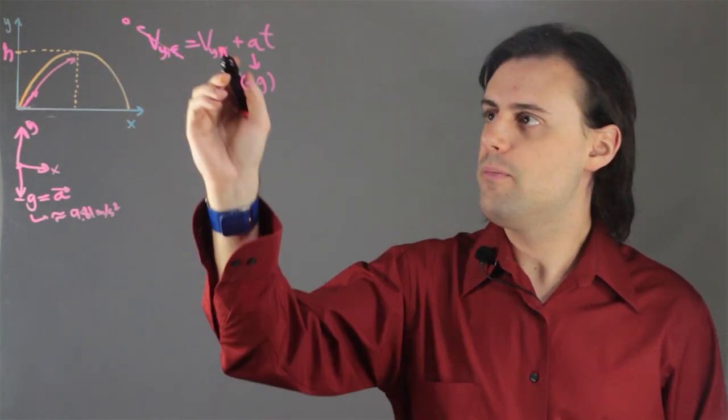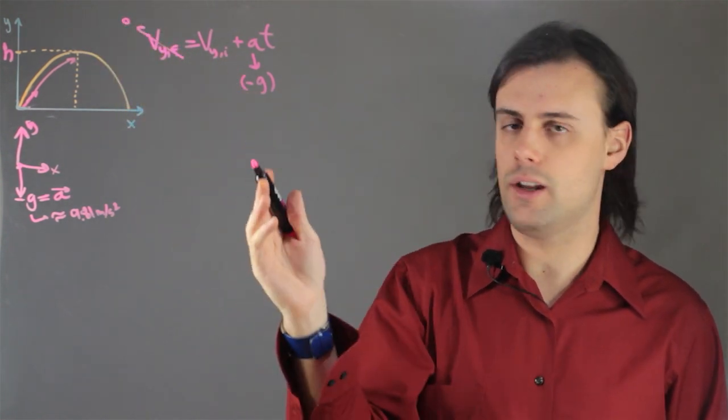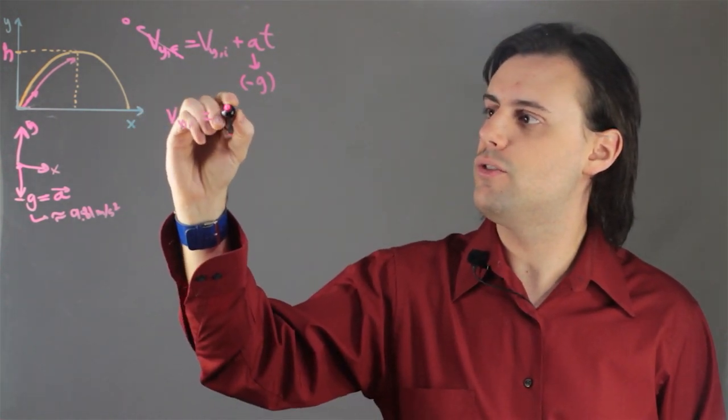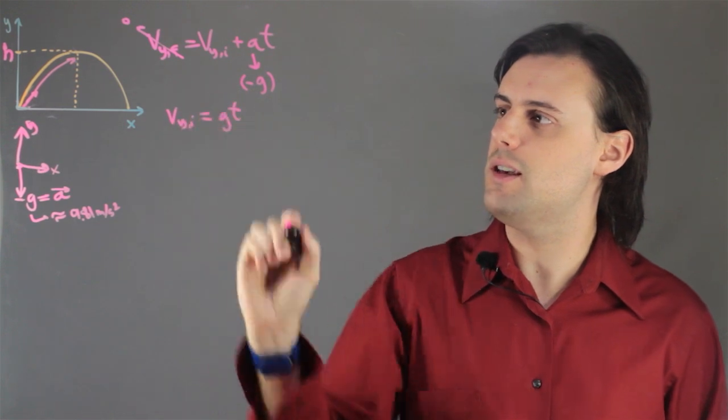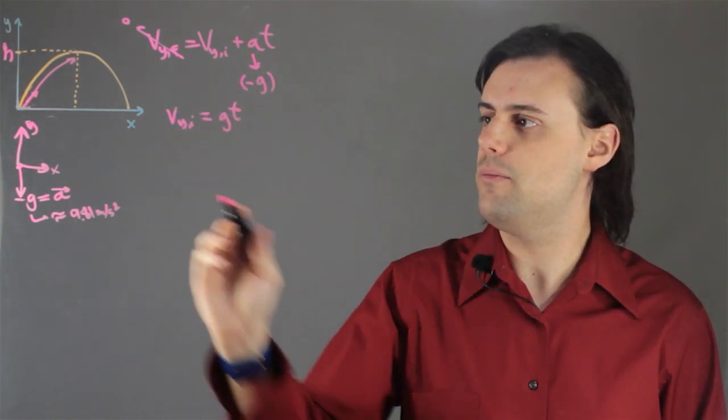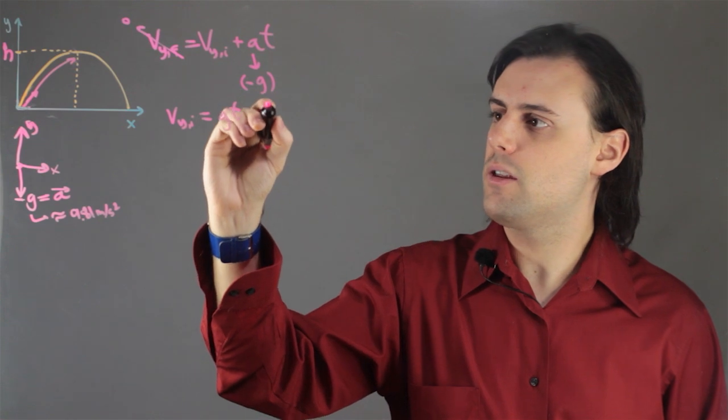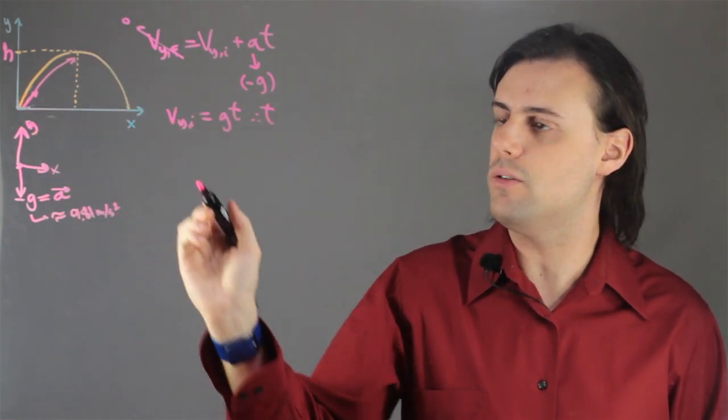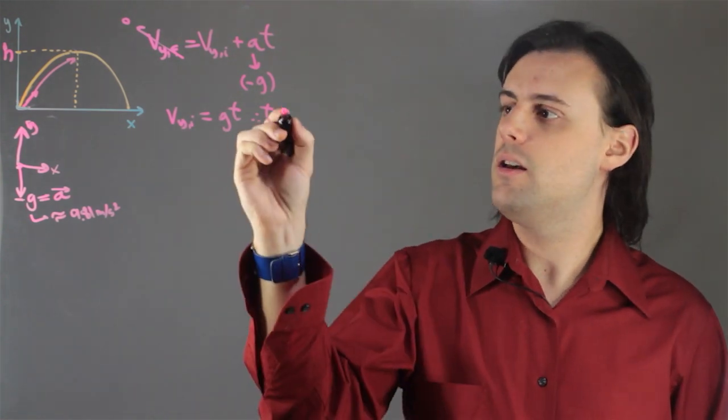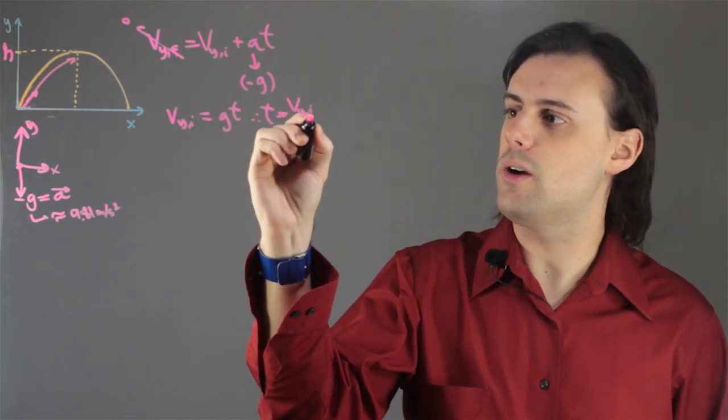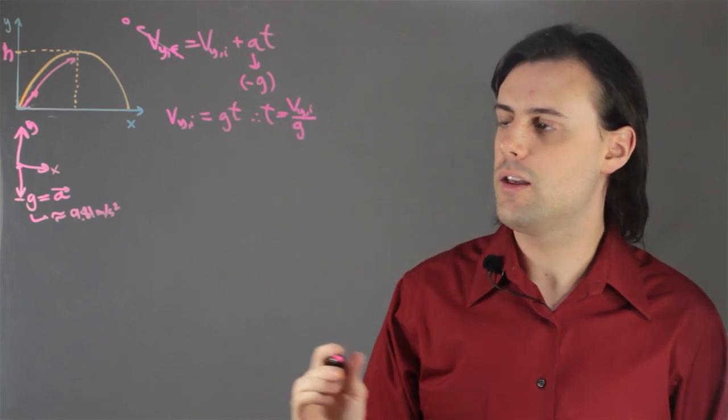So I can have one equation and one unknown here. I have v_y initial is equal to g times t, if I move the negative g t term to the other side. Therefore, the total time it takes to go from the origin, the initial point, to the final maximum height, is equal to the initial velocity in the y direction divided by g.